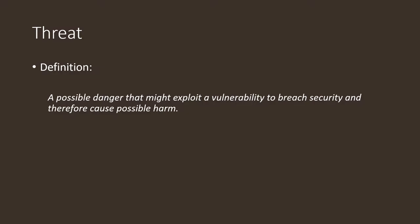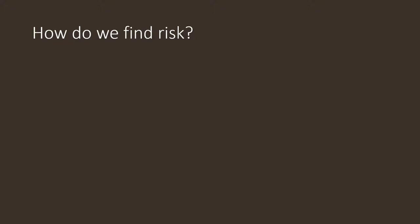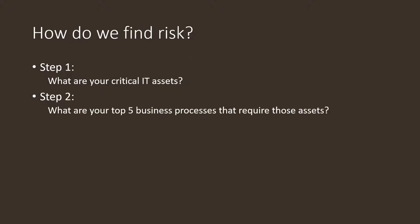Threats can come from anywhere — people, nation states, recently discovered exploits. So how do we find this risk? Your first step is to identify your critical IT assets: define them, write them down, and explain why they are critical. Step two is to identify your top business processes that require those assets. For example, your critical IT assets might be your sales servers or front-facing web servers, supporting business processes like sales, finance, and accounting.